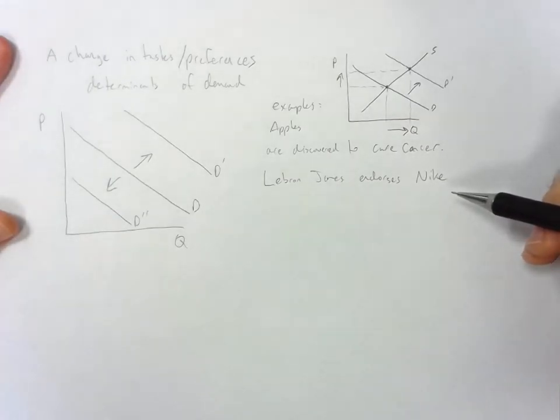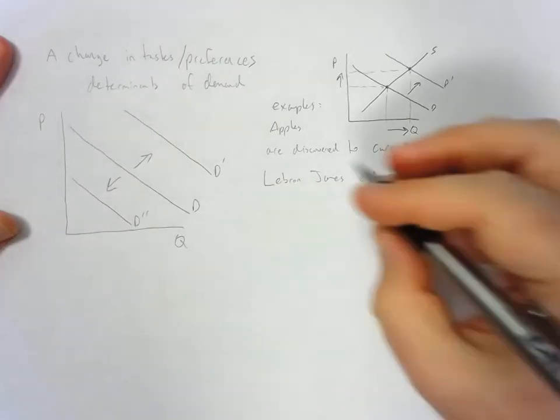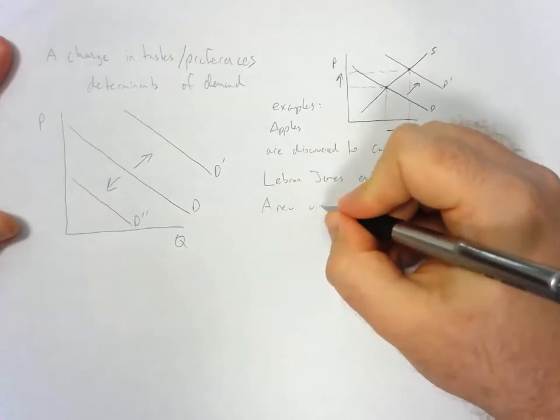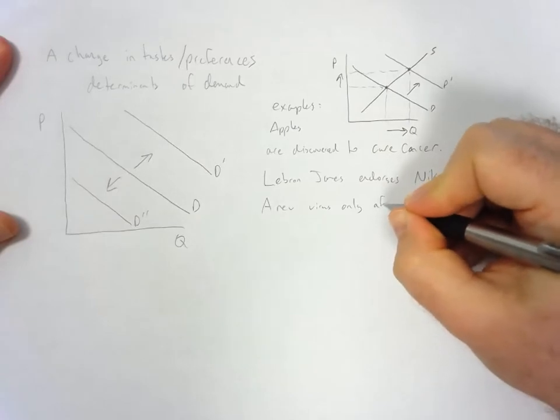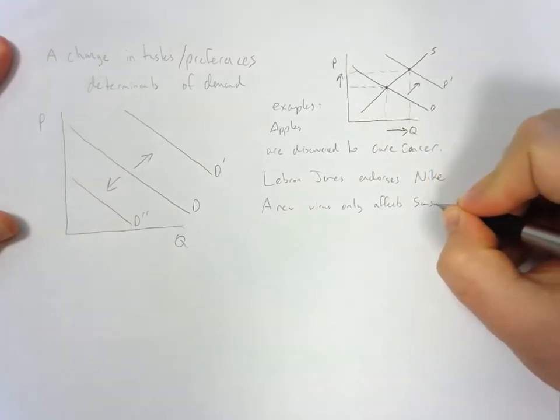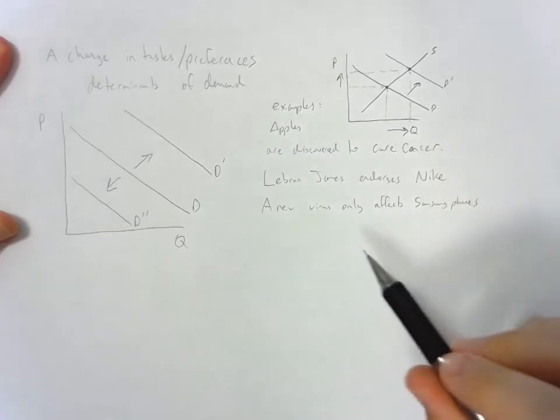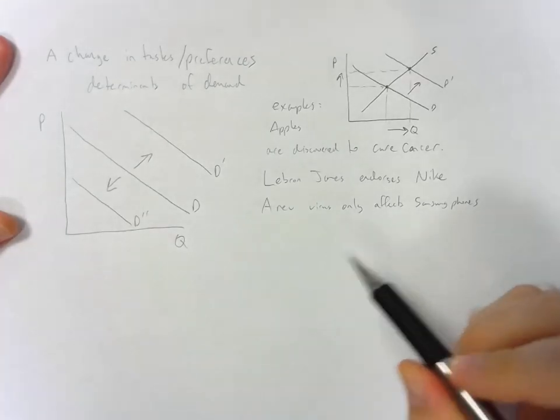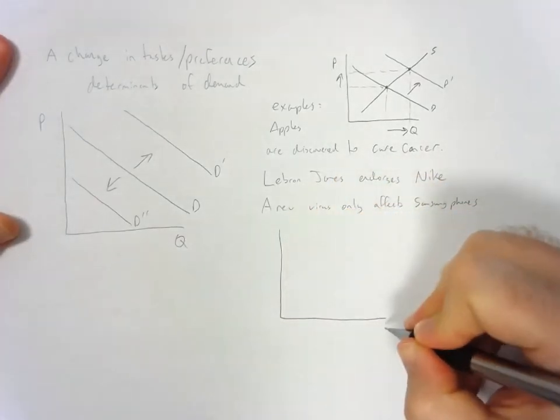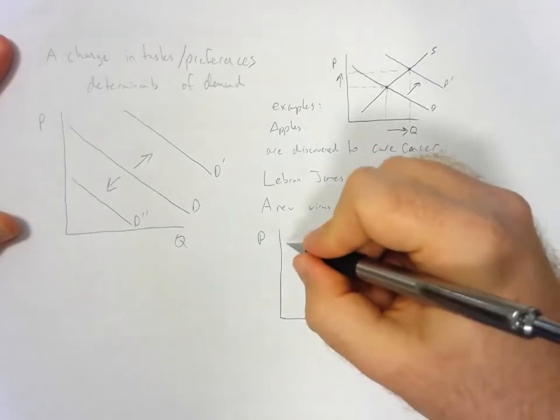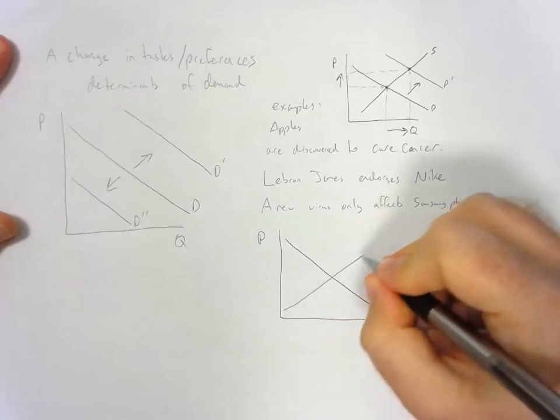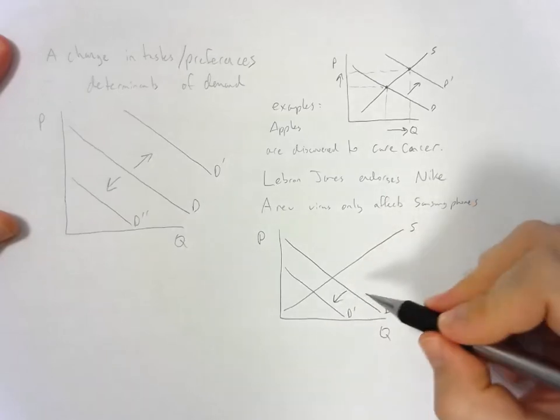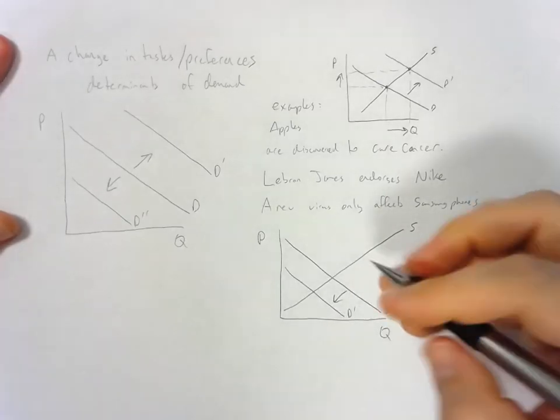What are some other tastes and preferences? Imagine that a new virus only affects Samsung phones. Or, a more realistic example could be that the new Samsung Galaxy Note catches on fire, and so people are afraid of it. You can imagine that the tastes and preferences would decrease for having that type of phone because you don't want a phone that catches on fire. So you see a decrease in demand, the tastes and preferences reduced.